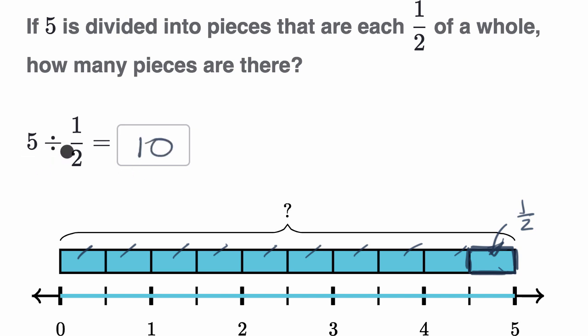So five divided into pieces of one half, or five wholes divided into pieces of one half, would be equal to 10 pieces. Let's do another example.